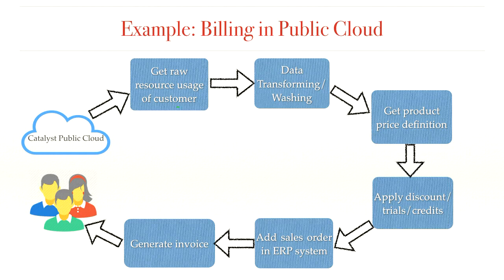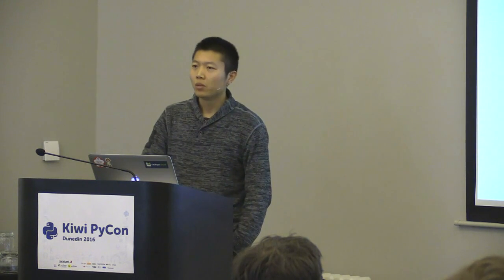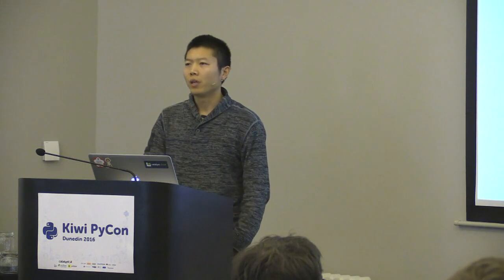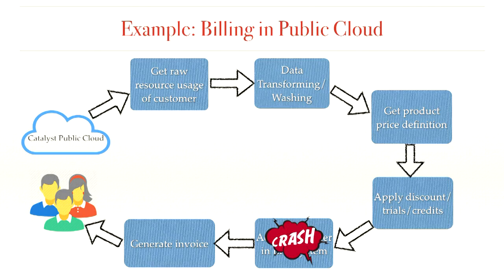So this whole process is a typical workflow — our billing service just does every job step by step. But we have an assumption: we assume each task works fine. In reality, failures can happen and we need to handle everything. For example, if the host the billing service is running on crashes while adding a sales order, we may need to rerun the whole workflow from scratch, or store information somewhere to avoid duplicate sales orders. Another possibility is that as a developer, I might want to debug a particular task without modifying the code — and later I'll show you how to do that with Mistral.